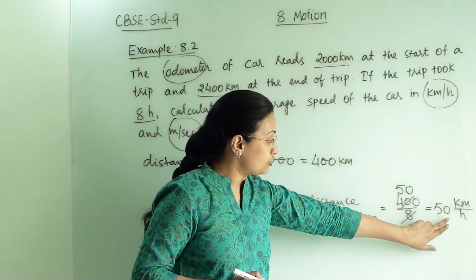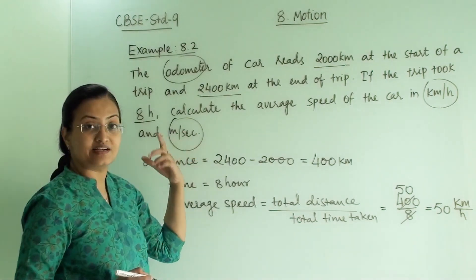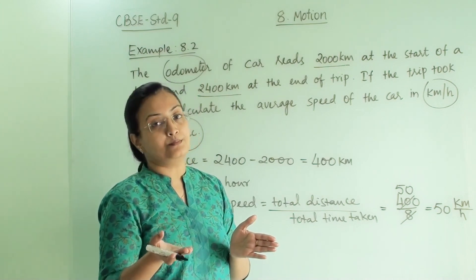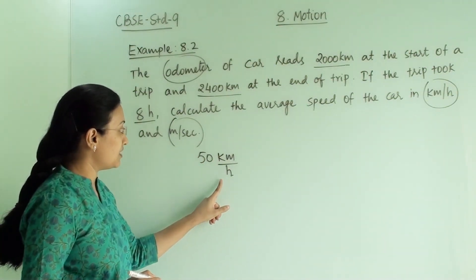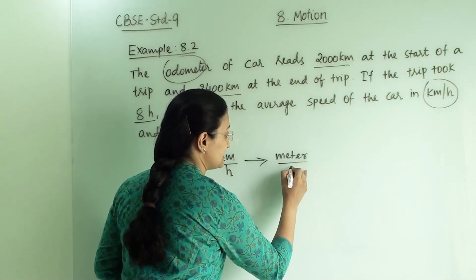So we have to also find out this distance in meter per second. Let us now understand how we can convert km per hour to meter per second. This is our answer: 50 km per hour that we have to convert into meter per second.